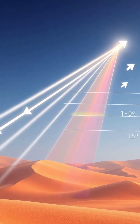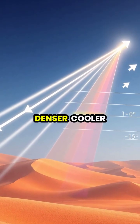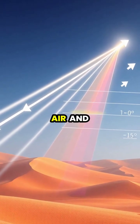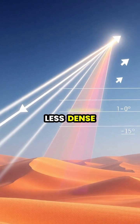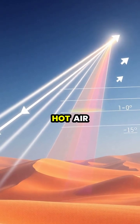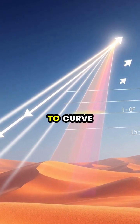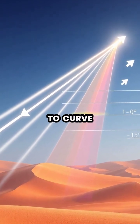Light travels slower through denser, cooler air and faster through less dense, hot air, causing the light rays to curve.